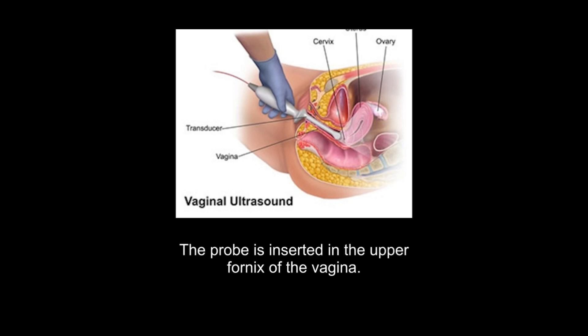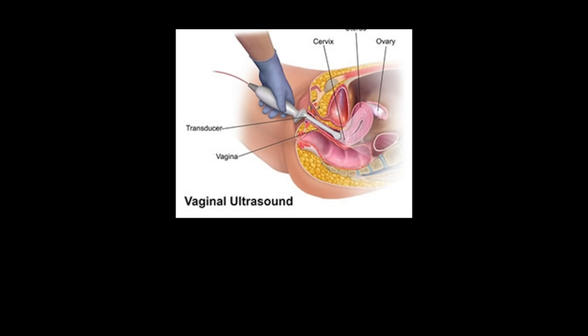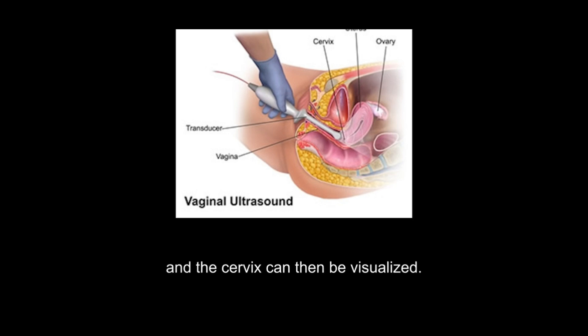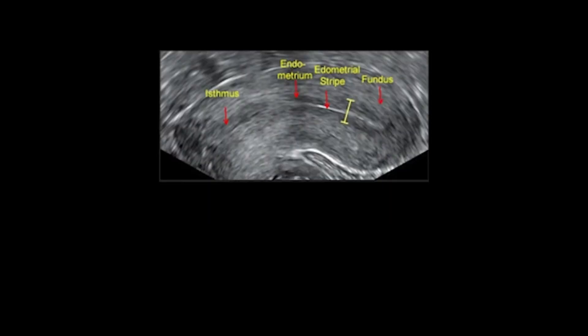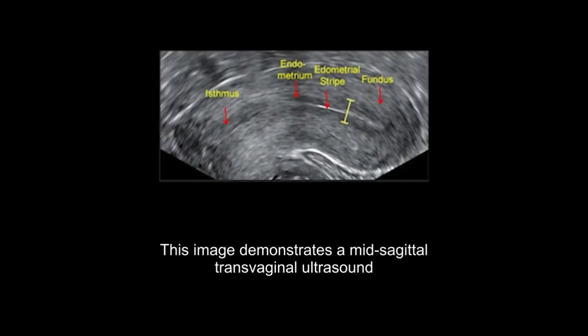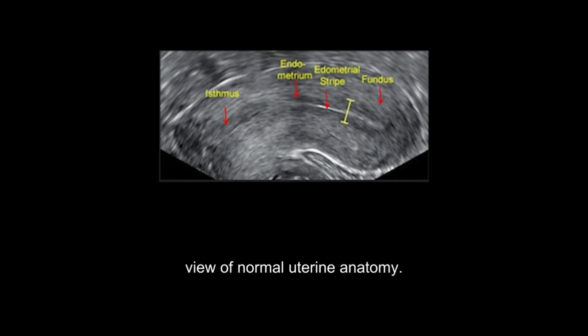The probe is inserted in the upper fornix of the vagina. The uterine fundus, the neck of the uterus, and the cervix can then be visualized. This image demonstrates a mid-sagittal transvaginal ultrasound view of normal uterine anatomy.